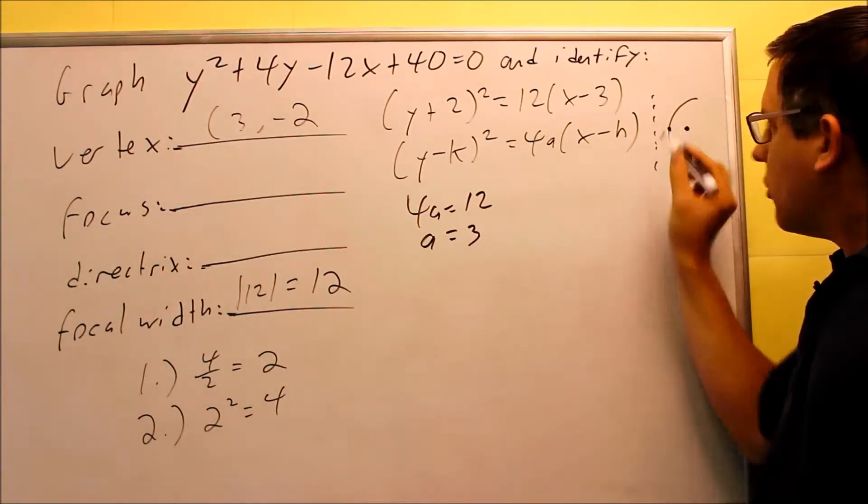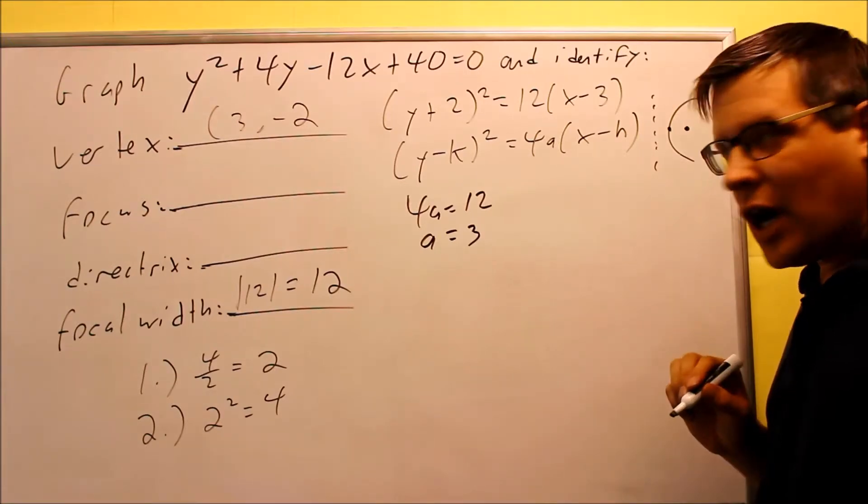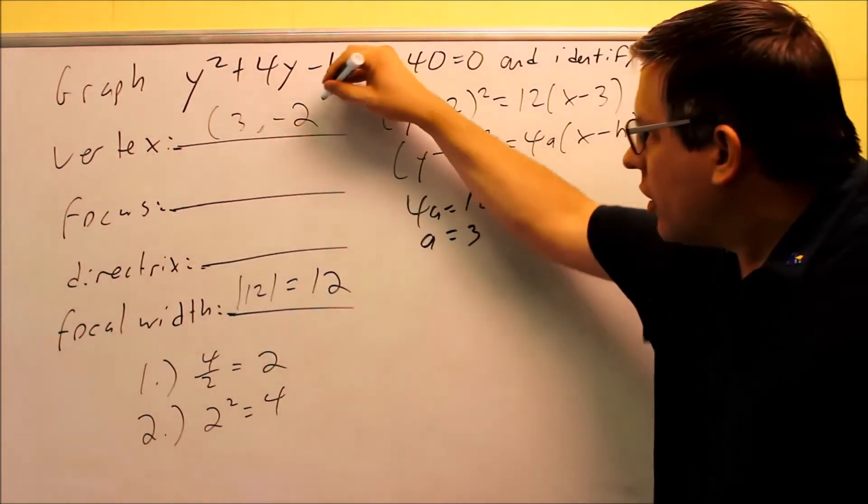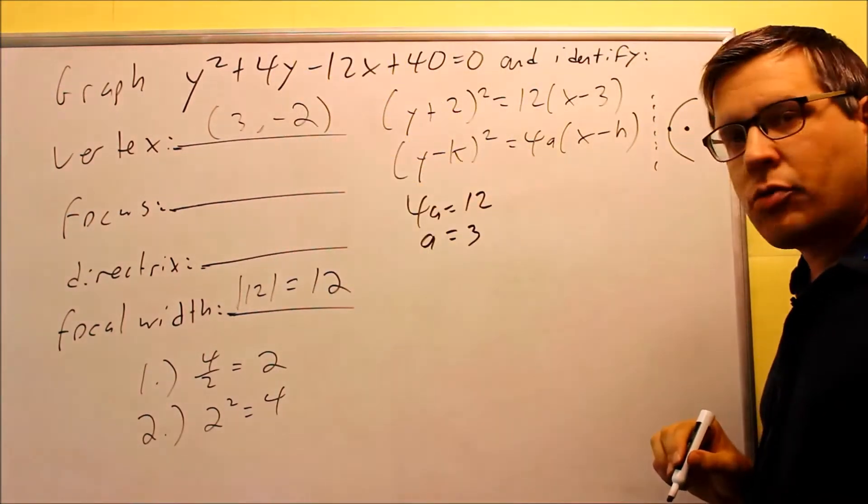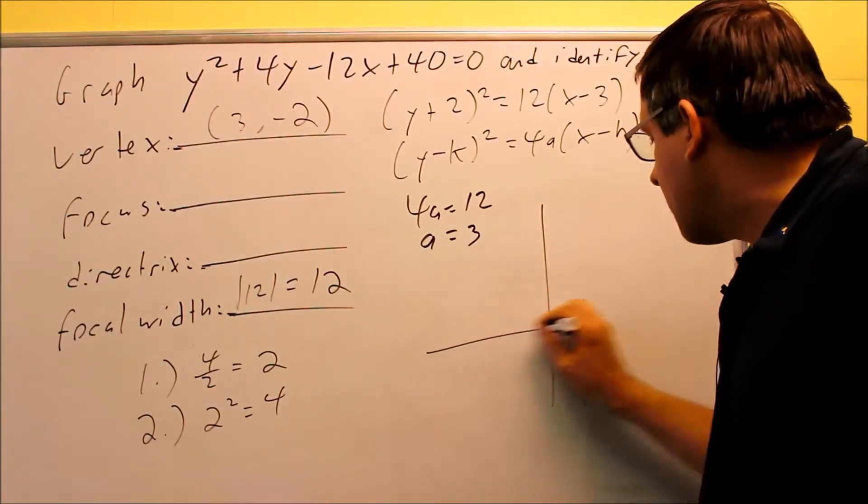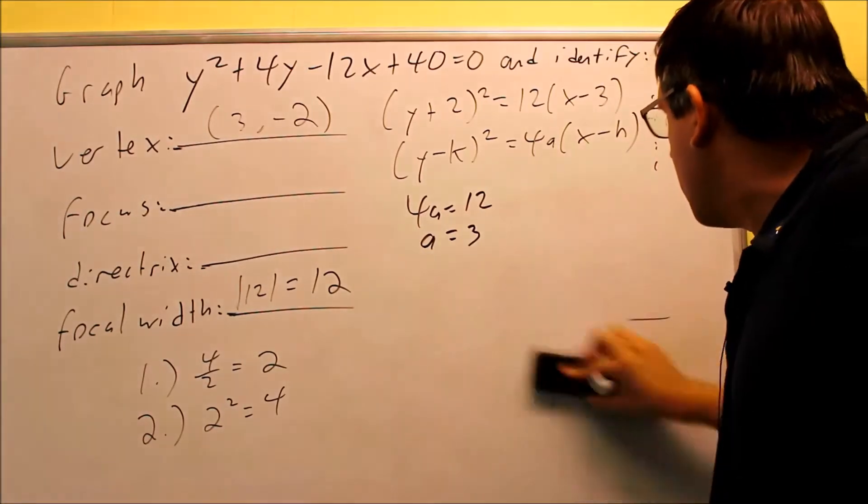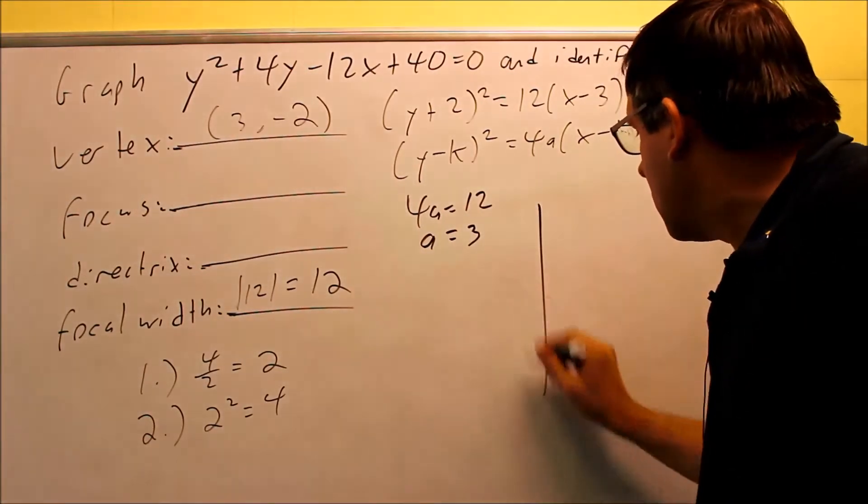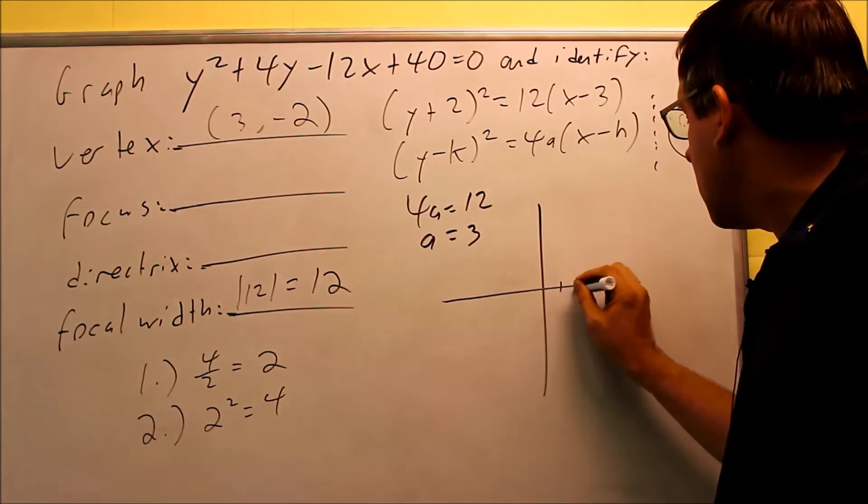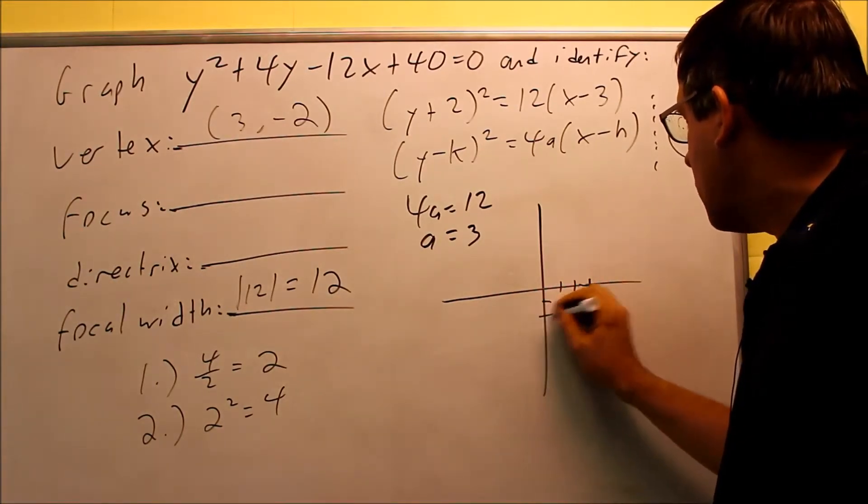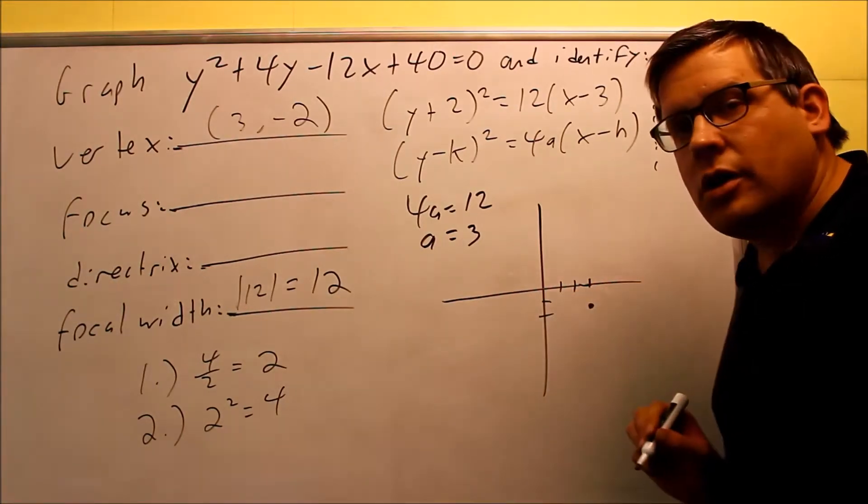I'm first going to begin with the vertex of 3, negative 2. Okay. So start with that. I'm going to go 3 and negative 2. Let me go ahead and raise this up a little bit so we have a little bit more space. Okay. So I have 3 and I have negative 2. 3 negative 2 is right there.